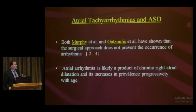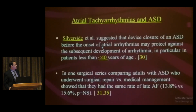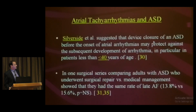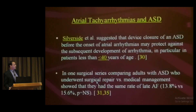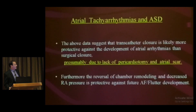Murphy and colleagues found that the surgical approach does not prevent the occurrence of arrhythmia, as atrial arrhythmias are likely a product of chronic atrial dilatation and increase in prevalence with age. Silverside suggested that device closure before the onset of atrial arrhythmias may protect against subsequent development of arrhythmias, mainly in patients less than 40 years. One surgical series comparing adults with ASD to medical management showed the same rate of late atrial fibrillation.